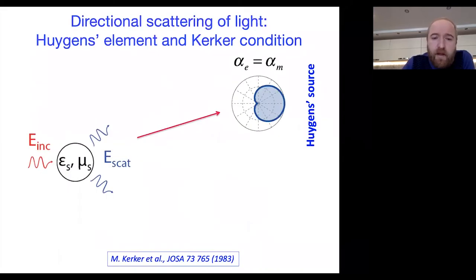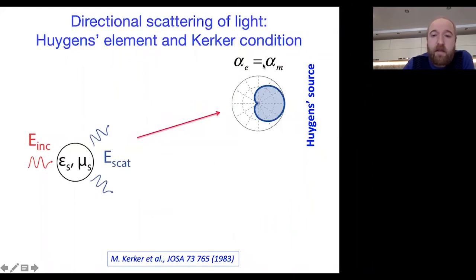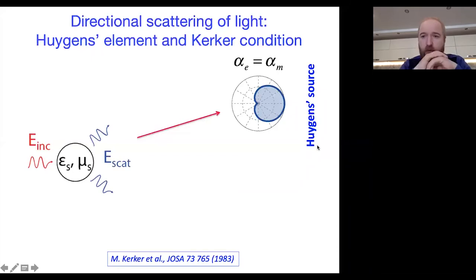The interference between electric and magnetic responses results in beautiful phenomena. One is the so-called Huygens element, or Kerker condition: when the electric polarizability and magnetic polarizability have the same phase and amplitude, we can cancel the backscattering of the particle, leaving only forward scattering — the so-called perfect Huygens element. This is the Kerker condition. It is also possible to realize the situation where the signs of electric and magnetic responses are opposite.